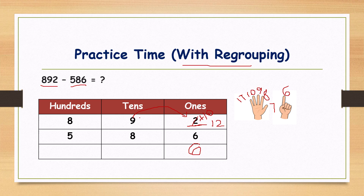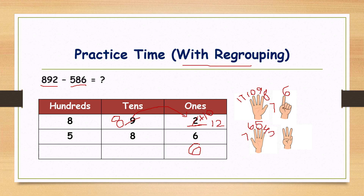The nine in the tens place becomes one less: nine minus one is eight. Now eight minus eight. Keep it in your mind: eight and open eight fingers, going backward — eight, seven, six, five, four, three, two, one, zero. What is eight minus eight? Zero. Remember kids, if you subtract the same numbers, the answer is always zero.